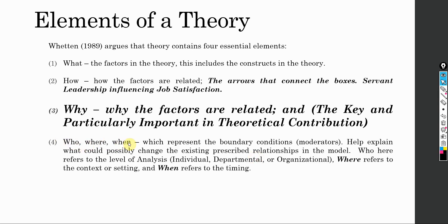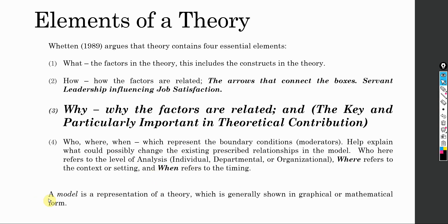The fourth element is 'Who, Where, and When.' This represents the boundary conditions — that is, moderators — and helps explain what could possibly change the existing prescribed relationship in the model. 'Who' refers to the level of analysis: individual, departmental, or organizational. 'Where' refers to the context or setting, and 'When' refers to timing. Finally, a model is the representation of a theory, presented in graphical or mathematical form.